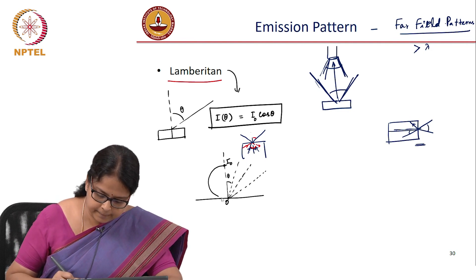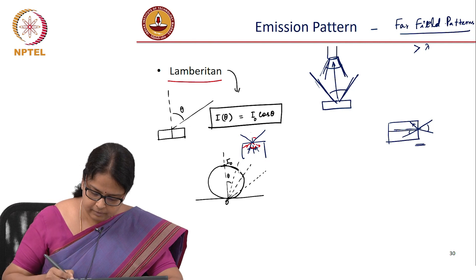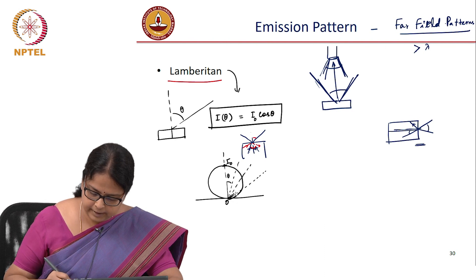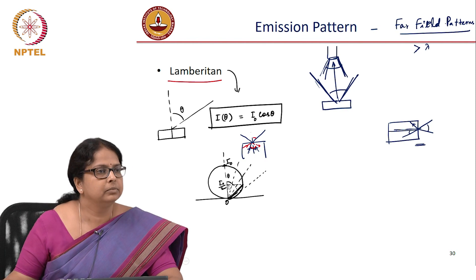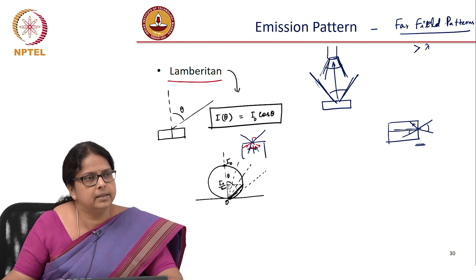If I plot this, this is going to look like, it is not come out really to scale nicely, but at theta equal to 60 degree, this should become I naught divided by 2. And typically, LED emission pattern is a Lambertian.